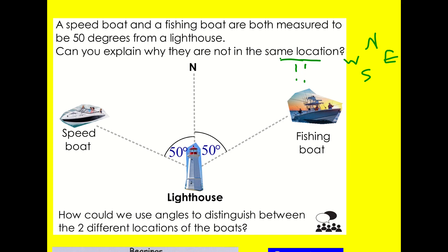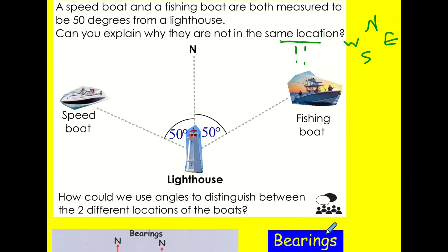We can see that. But we might describe to somebody that maybe they're 50 degrees from the north. How could we use angles to distinguish between the two different locations of the boats? Today's topic is bearings, and this is how we distinguish between them. We go from the north line, but our definition of a bearing is that we go clockwise round. So if I go clockwise, I'm going to go 50 degrees for the fishing boat. But for the speedboat, because I'm going clockwise, I'm going to have to go even further. Hence, we can distinguish between them using an angle.